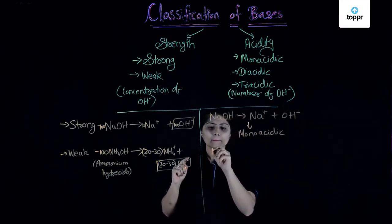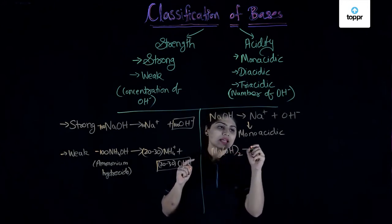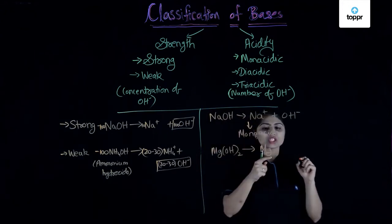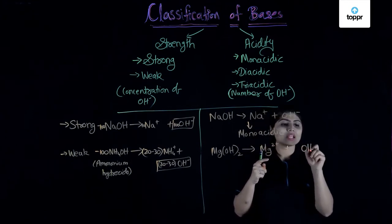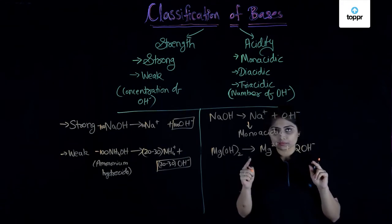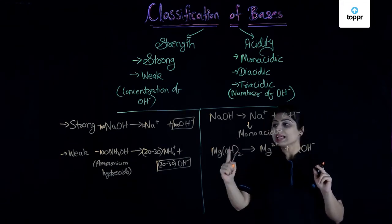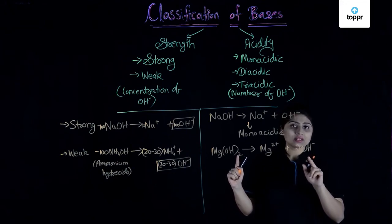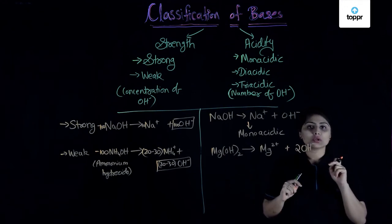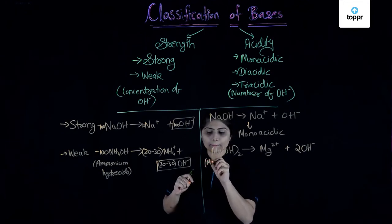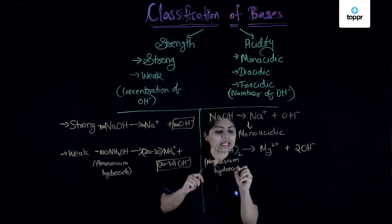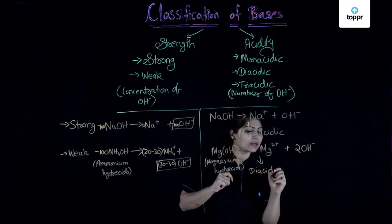Let's talk about magnesium hydroxide. When Mg(OH)2 splits, it gives Mg2+, because magnesium has the capacity of giving two electrons. But OH can accept only one electron, which is why we require 2 OH-. So when one molecule of Mg(OH)2 splits, it gives 2 OH- ions. For an acid to neutralize this base, there are 2 OH- to neutralize, so magnesium hydroxide is a diacidic base.